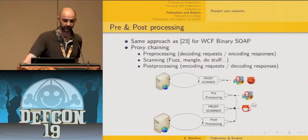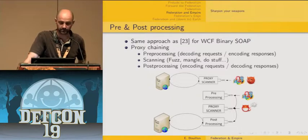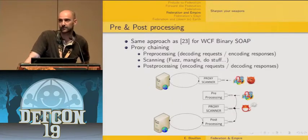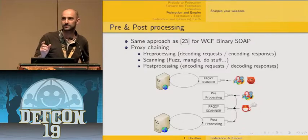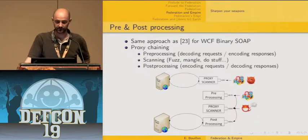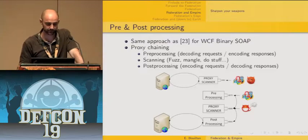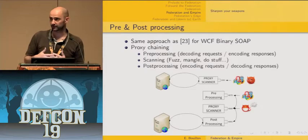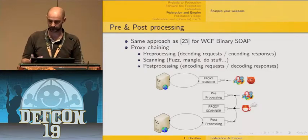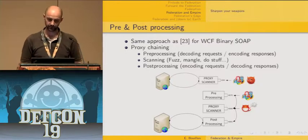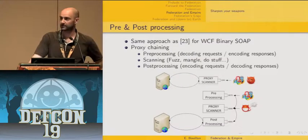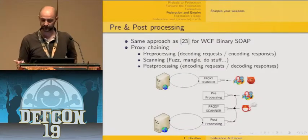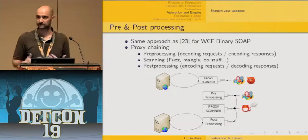The approach I've been using — not a new one, previously used by JDS Security when assessing Microsoft's proprietary binary encoding of SOAP requests for WCF — is to chain proxies. First, a preprocessing proxy whose role is to decode requests and encode responses. The middle proxy is your real scanner where your intelligence as a pentester takes place. Then a postprocessing proxy that encodes requests back and decodes responses, so the application still receives requests in the proper expected format.